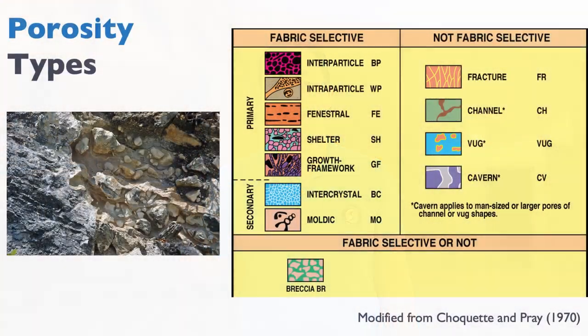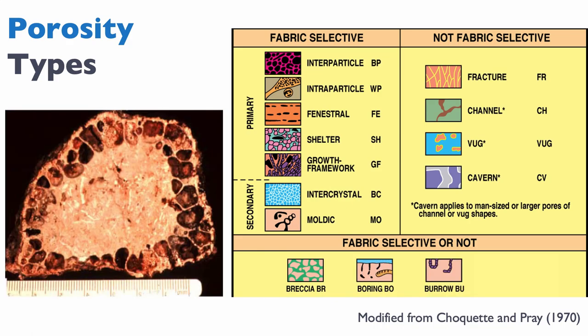However, if you consider that the fabric of the rock is the fabric of its components — for example, the limestone blocks within the breccia — then the porosity between those primary components becomes a not-fabric-selective, secondary porosity. So we can't really determine which one it is. Another type of porosity that can be either fabric selective or not are borings or burrows: they can be considered fabric selective because they were present at time of deposition and form their own fabric within the rock.